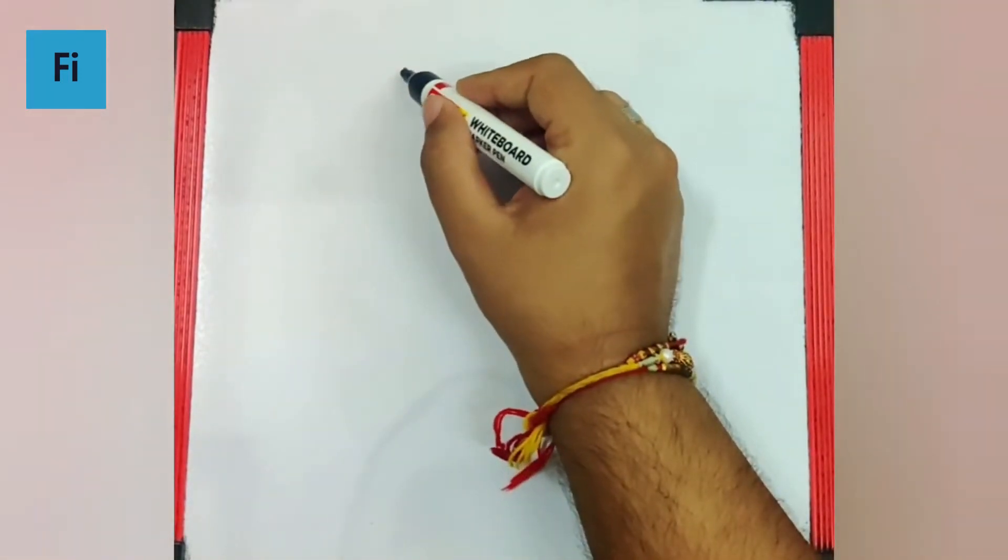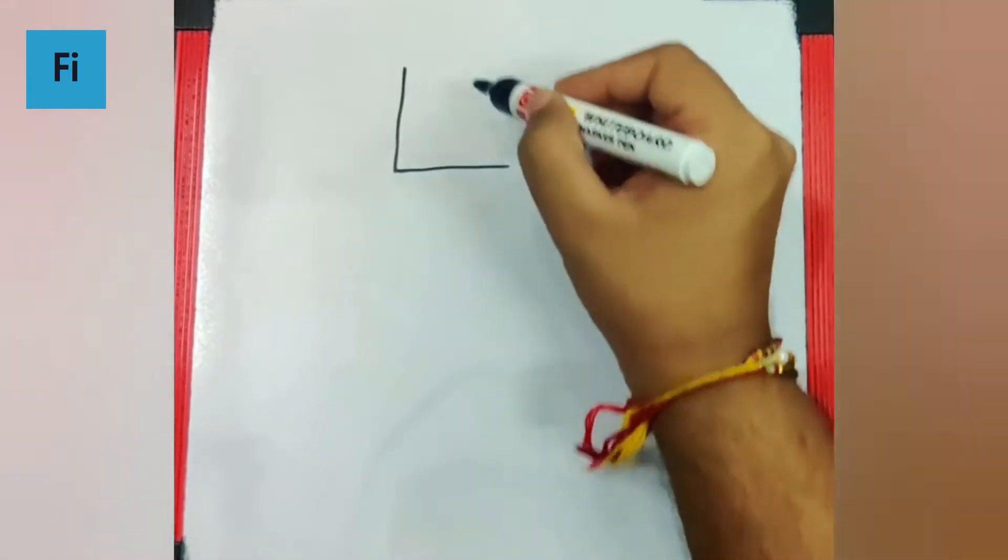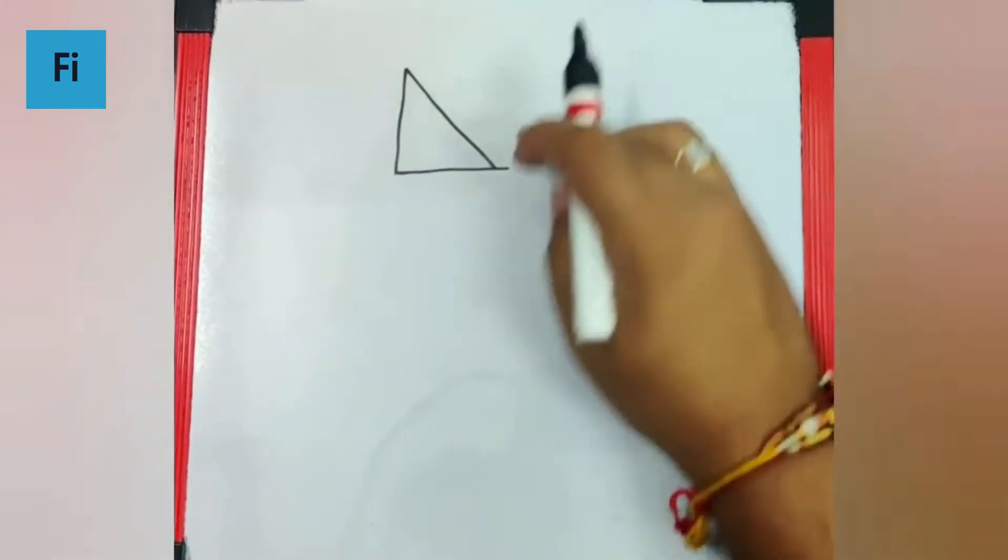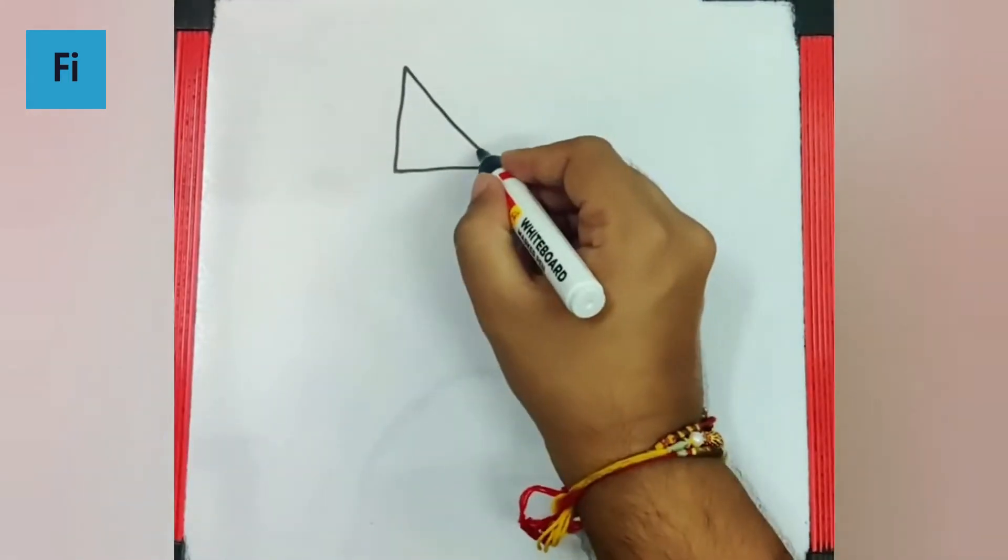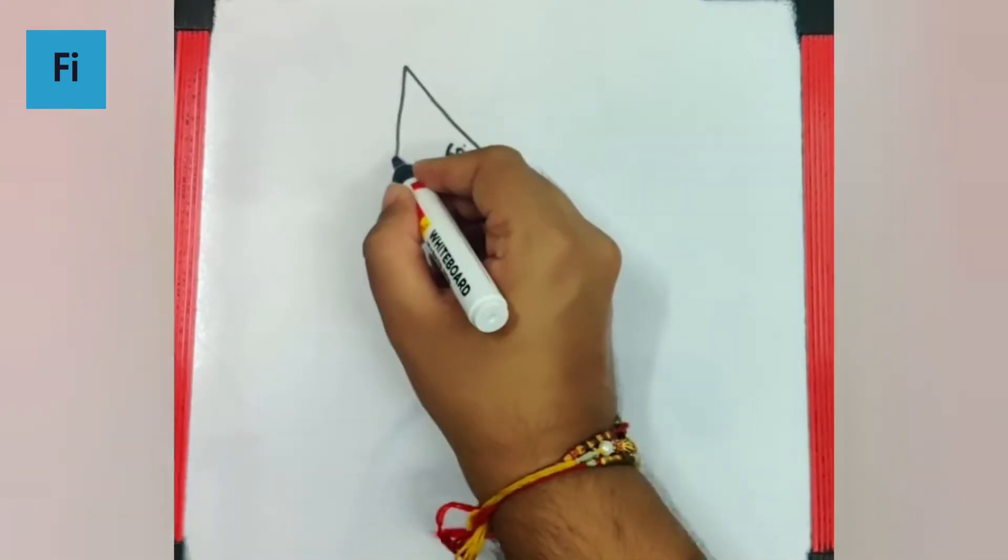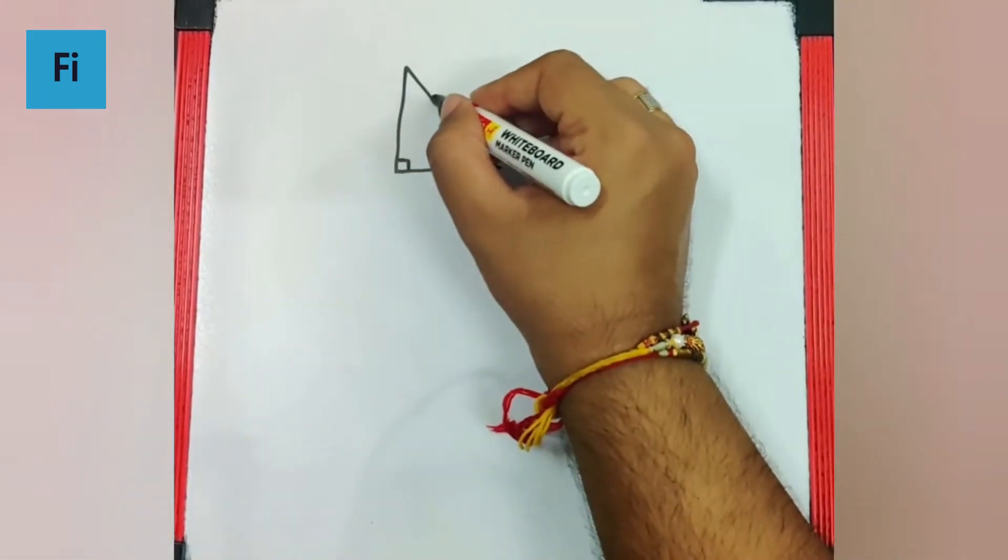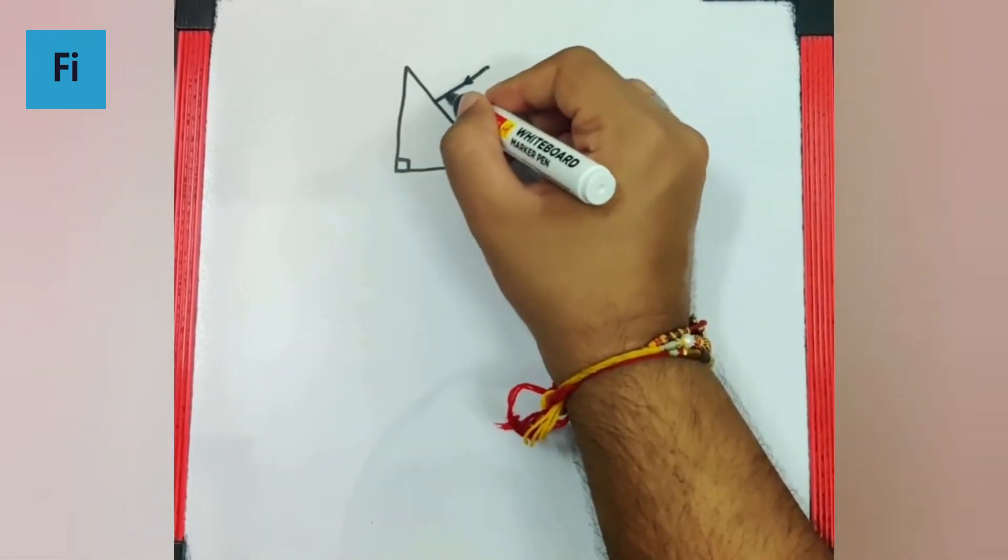Now here the diagram is given as we have a right angle triangle. Here the angle is 60 degrees. This is 90 and here the light is incident normally.